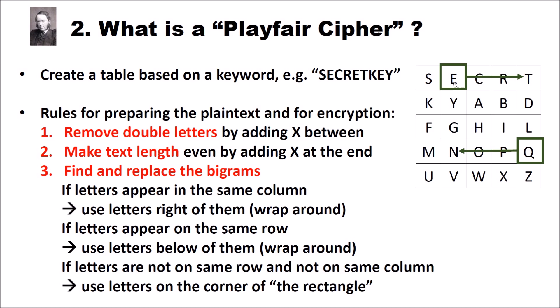What is the key space size of a Playfair cipher? We have 25 factorial different possible tables: for the first letter we have 25 positions, for the second 24, for the third 23, and so on, and we multiply these possibilities. Thus we have 25 factorial different possible tables, and 25 factorial is about 2 to the power of 84, so the Playfair cipher has a really huge key space.